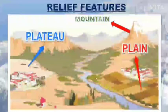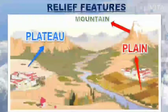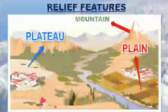My dear students, what is a landform? The landform is the natural, geographical or physical features of the earth that are classified into various types. You have already studied about various landforms in your previous class, such as mountains, hills, valleys, plateaus, plains, etc.